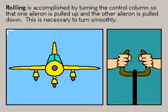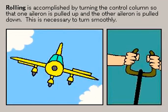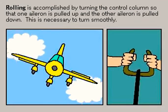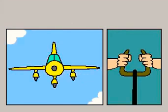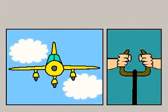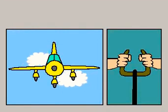Rolling is rotating the plane along the axis of its fuselage and is accomplished by turning the control so that the ailerons on the wings are up on one side and down on the other.